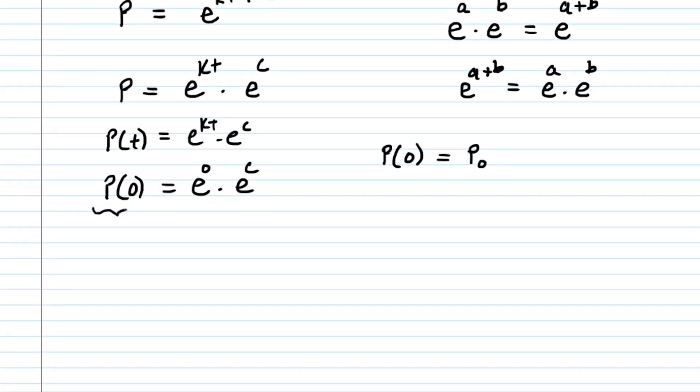As noted a moment ago, this P(0) can be symbolized by the initial population, P₀. e^0 is one, times e^c. So we can see that this e^c is simply the initial population, P₀. So you're going to go back to this equation right here, and this e^c can be substituted with P₀.